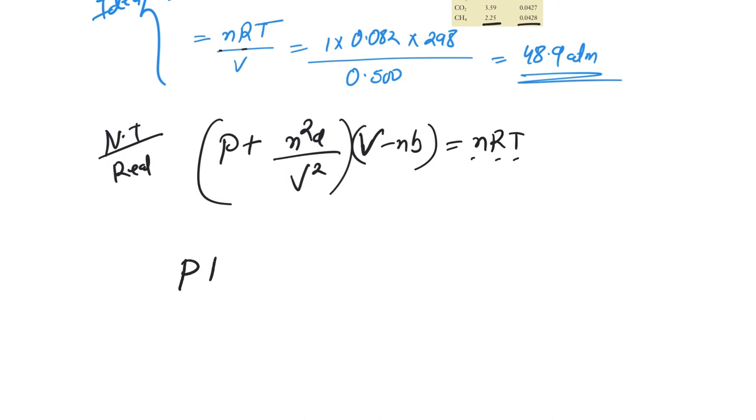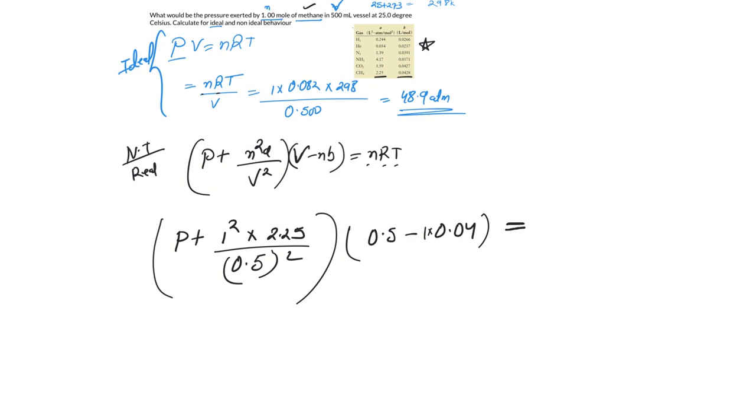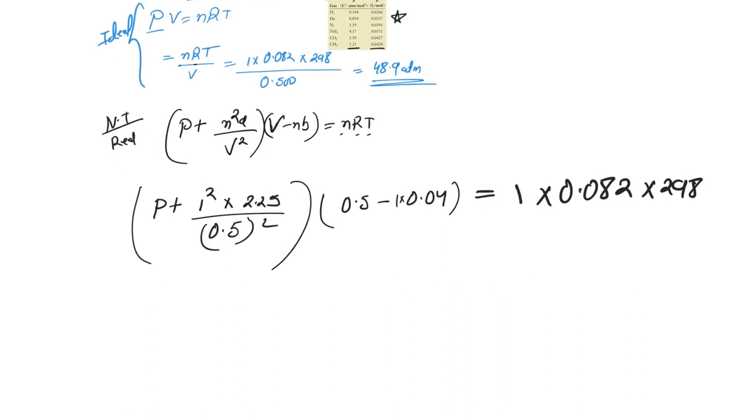So you have P plus one squared is one into a. n squared a, a is about 2.25, so let's write 2.25 and v squared 0.5 squared. So that's P. V minus nb, 0.5 minus n, n is 1, so 1 times 0.04. V minus nb. Now this is going to be equal to 1 times 0.082, that's the R, times 298 Kelvin. Now this becomes a more calculative work.